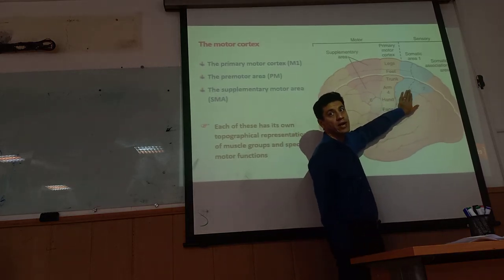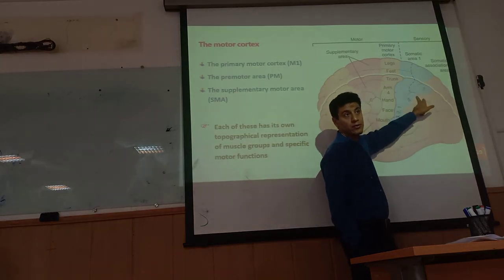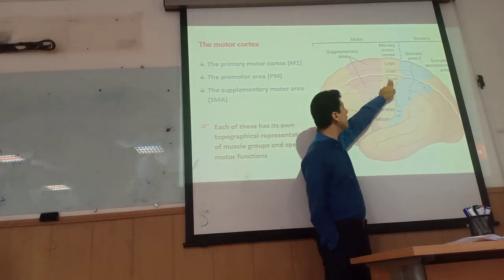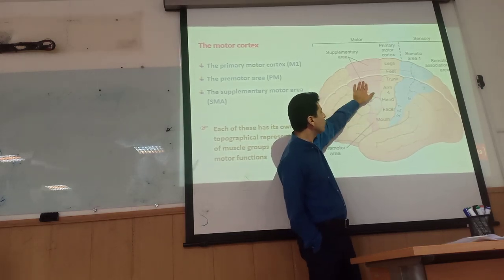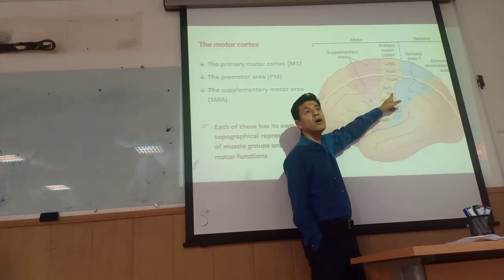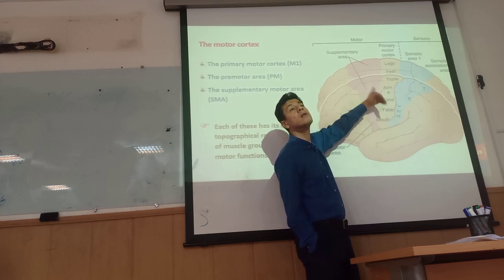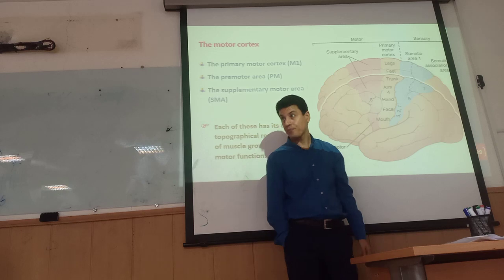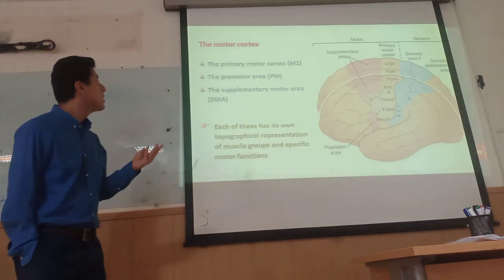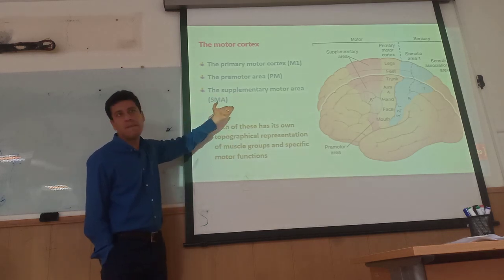Behind the central fissure we have somatosensory area 1 and somatosensory association areas. Anterior to the fissure we have Brodmann area 4, which is the primary motor cortex, and Brodmann area 6. We identify: primary motor cortex M1, pre-motor cortex PM, and supplementary motor area SMA.